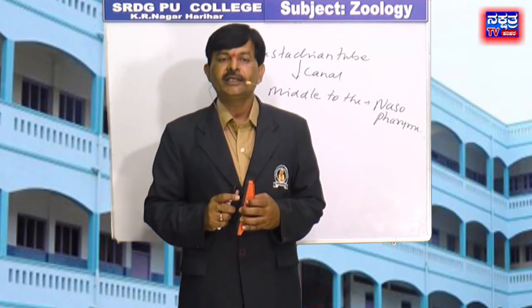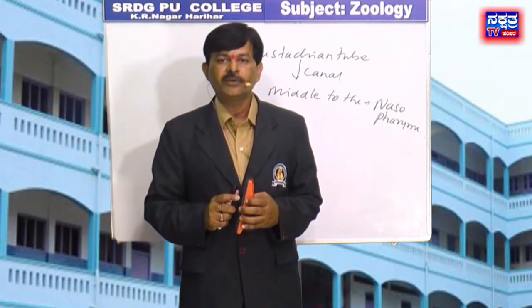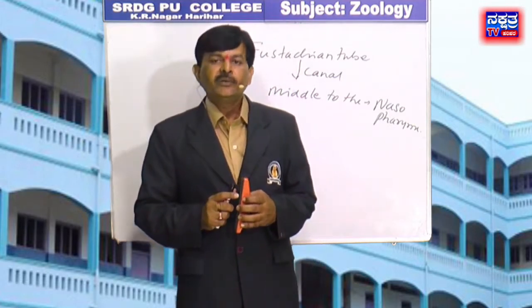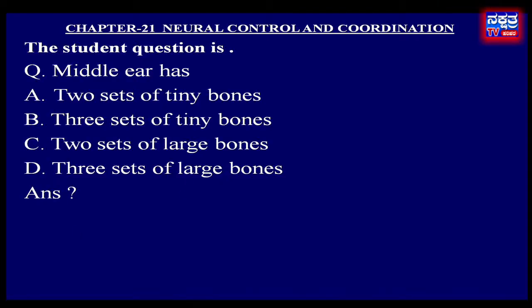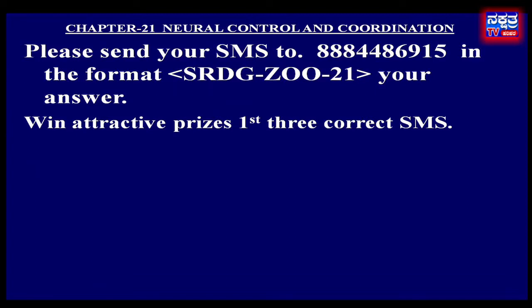Okay students, it is time to end this episode. I hope you have understood this chapter. At the end of every episode, we ask a question to the students. The student question is: Middle ear has — A. 2 sets of tiny bones, B. 3 sets of tiny bones, C. 2 sets of large bones, D. 3 sets of large bones. Please send your SMS to 888-244-86915 in the format SRDC-ZOO-21. Type your answer as A, B, C, or D. The first three correct SMS senders will get a gift from SRDC PU College.